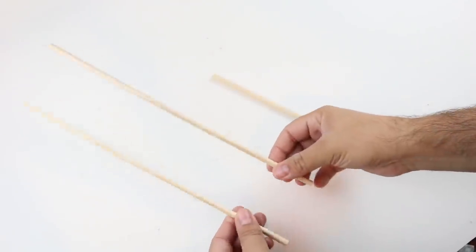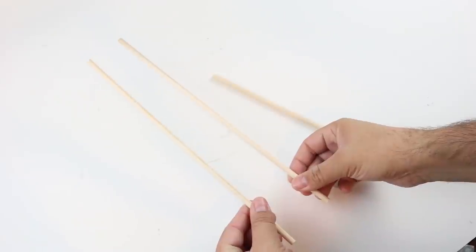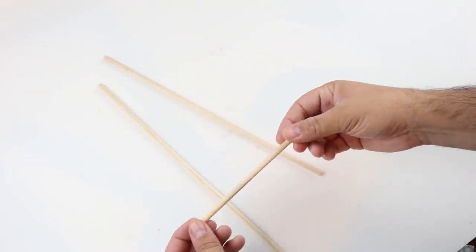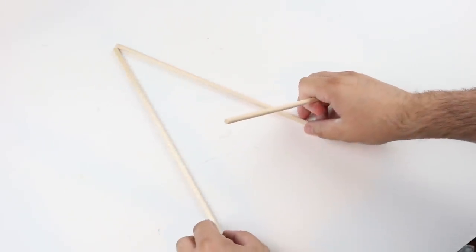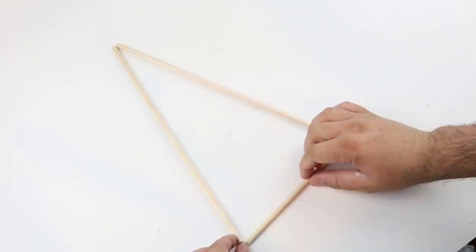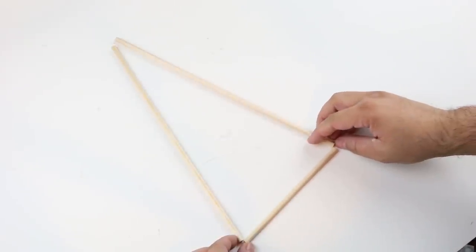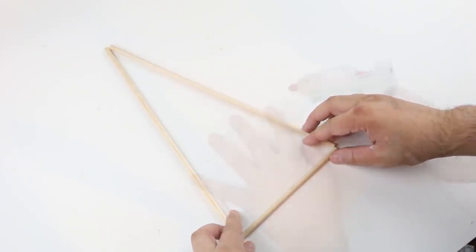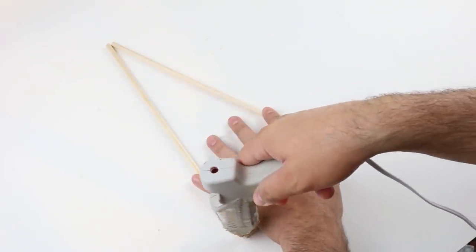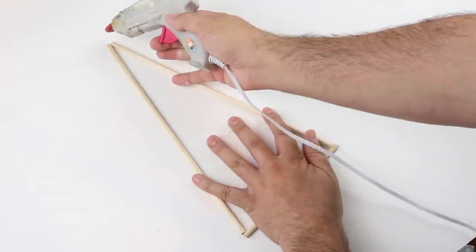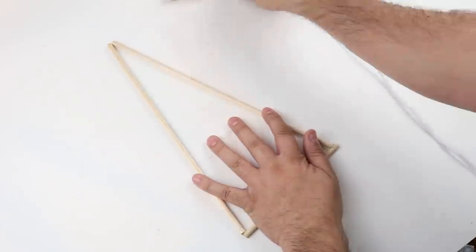For this project we're going to be using these dowel rods from Dollar Tree, the 12 inch and the 6 inch. We're creating very minimalistic Christmas trees. I started by taking two of the 12 inch dowels for the vertical part of our tree and a 6 inch dowel for the horizontal bottom part, then using hot glue to glue these together.